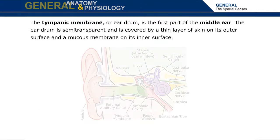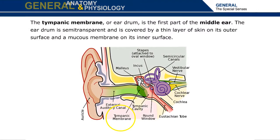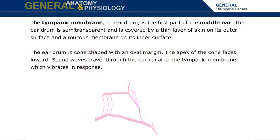The tympanic membrane, or eardrum, is the first part of the middle ear. The eardrum is semi-transparent and is covered by a thin layer of skin on its outer surface and a mucous membrane on its inner surface. The eardrum is cone-shaped with an oval margin, and the apex of the cone faces inward. Sound waves travel through the ear canal to the tympanic membrane, which vibrates in response.